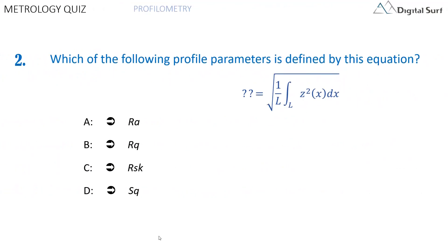Question number two. Which of the following profile parameters is defined by this equation? Answer A: RA. Answer B: RQ. Answer C: RSK. Answer D: SQ. One correct answer only.